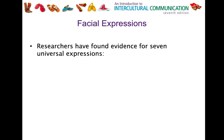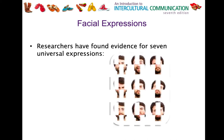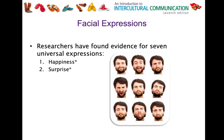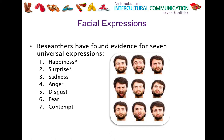Researchers have found evidence for seven universal facial expressions recognizable around the world. Happiness and surprise are the most recognizable — you should know these for a quiz. If someone is smiling or laughing, we can pretty much understand what that means no matter which culture we're from. The remaining five are sadness, anger, disgust, fear, and contempt, which was added in recent years. Know all seven, but definitely know the top two: happiness and surprise.